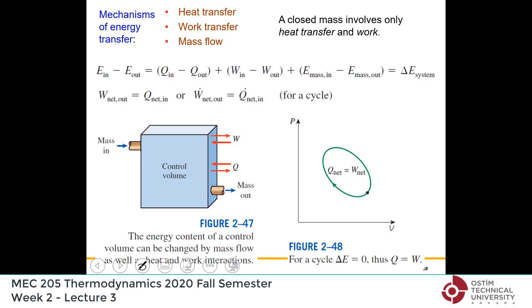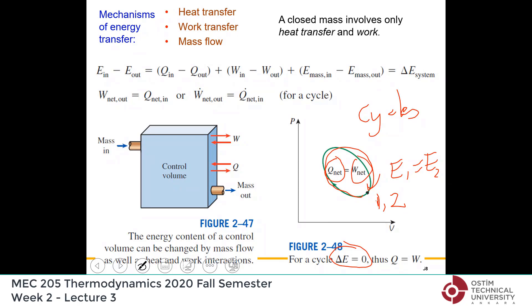A special case: if you have a cycle — a process that starts at state 1 and returns to state 1 — then since energy is a property, E1 and E2 are the same. Therefore for cycles, energy in must equal energy out, or net heat must equal net work. This is what we use when analyzing car engines, steam power plants, and similar systems.